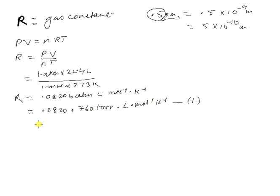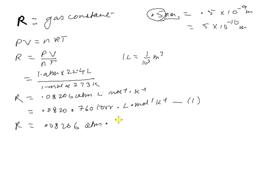For a second conversion, starting from 0.08206, suppose I want to convert liters into meter cubed while keeping ATM and other units the same. I know that 1 liter equals 1/10³ meter cubed. So I replace liter with (1/10³) meter cubed, per mole per Kelvin. Multiplying the numbers gives the desired value for R in those units.